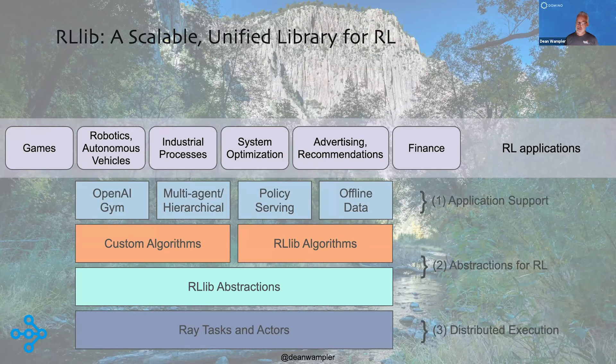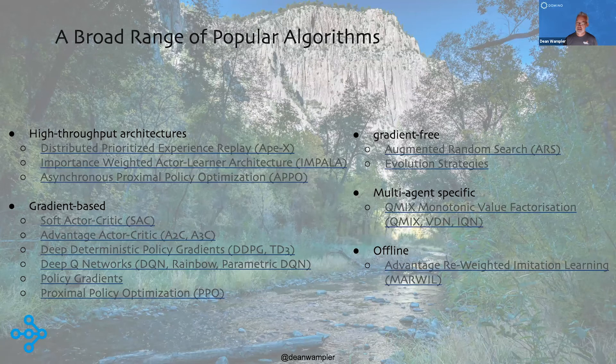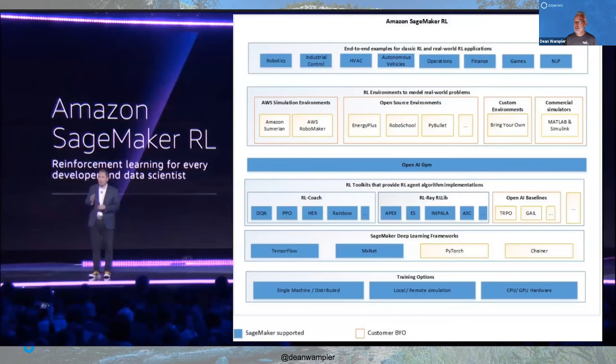Back to reinforcement learning with Ray — with RLlib. It's designed to be not only very performant by using Ray at the bottom, but also to give you lots of abstractions for building new algorithms. This is an area of hot research with a lot of different algorithms structured in very different ways. There's an eye chart listing some of the algorithms — state-of-the-art research algorithms available in Ray. You can also use this stuff in SageMaker, and it's also available in Azure.